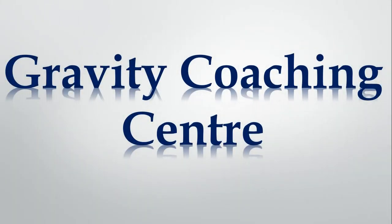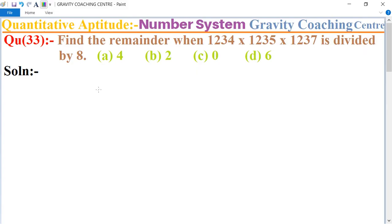Welcome to our channel, Gravity Coaching Centre. Quantitative Aptitude, chapter Number System, question number 33: Find the remainder when this expression is divided by 8. So 1234 by 8. First we take two digits, 8 into 1...